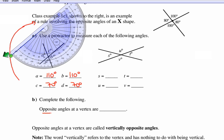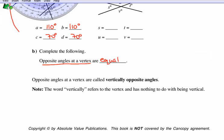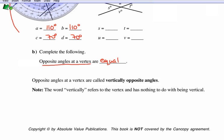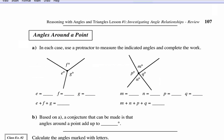Opposite angles at a vertex are equal. We can also call them vertically opposite angles — that's just another name for the same property. Not only do our straight lines add to 180, but opposite angles at a vertex are equal.